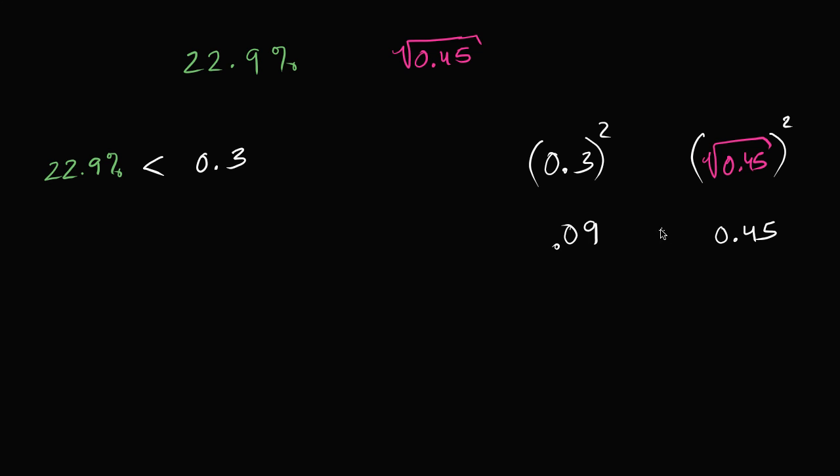So 0.09 is clearly less than 0.45, or 0.3 squared is clearly less than the square root of 0.45 squared. And so we know that 0.3 is going to be less than the square root of 0.45.